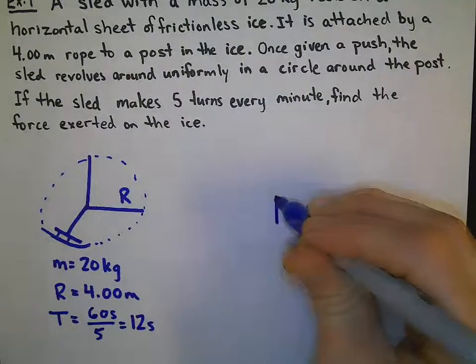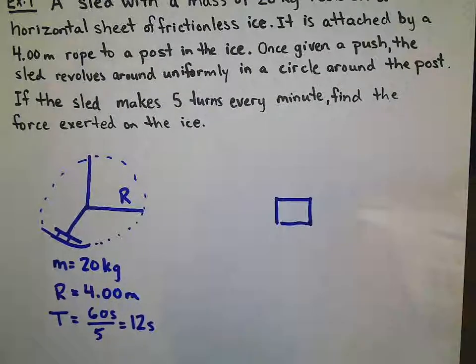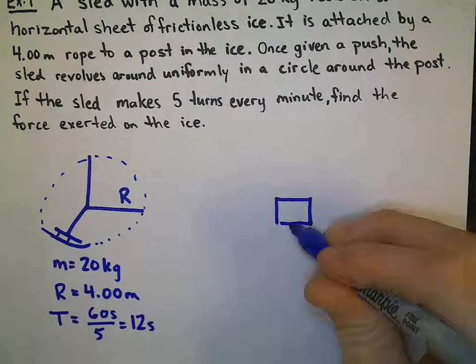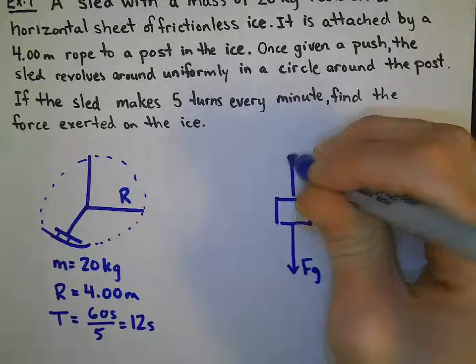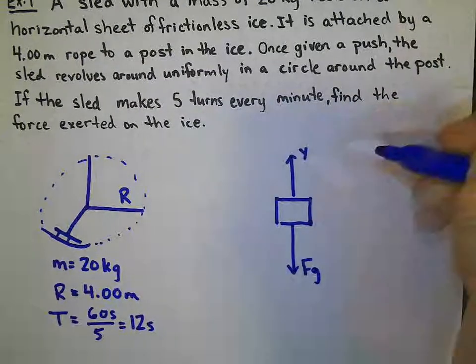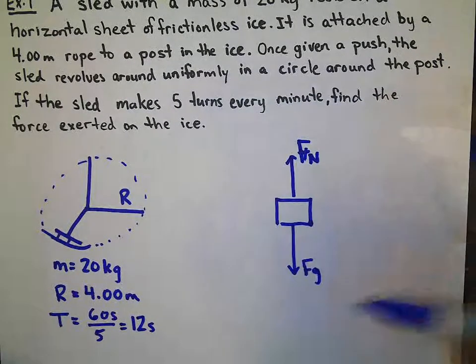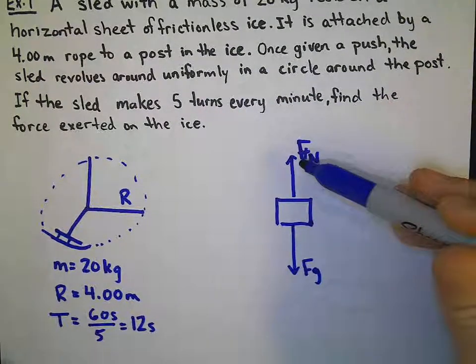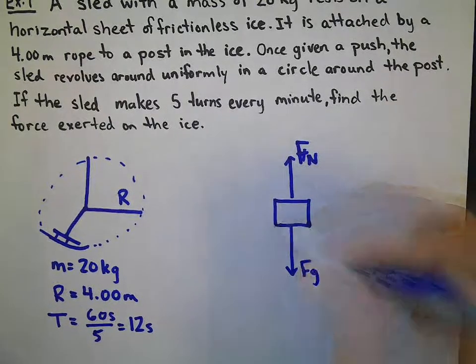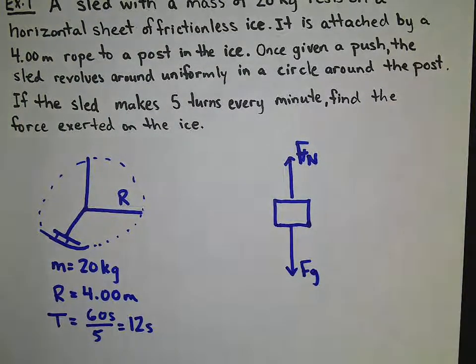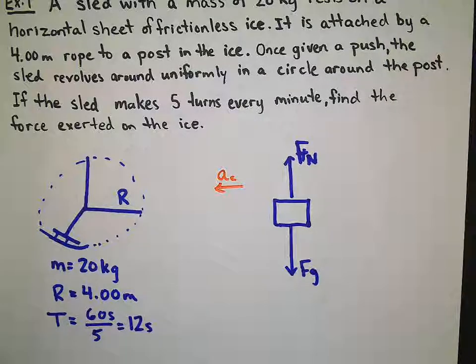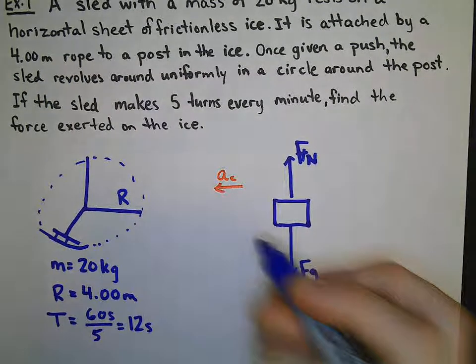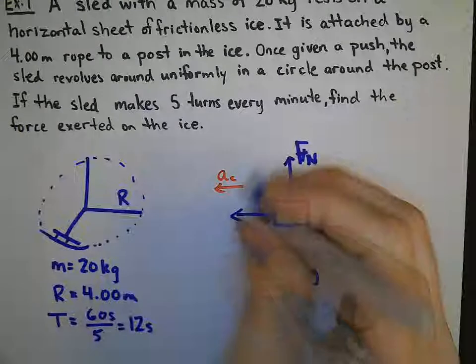If I have my sled as a free body diagram, picture this on the ground. The force of gravity is going to be acting down, and I will have that normal force acting in the opposite direction. These two are equal values because our sled stays in contact with the ground. We know, in this case, that my sled is accelerating towards the center. Therefore, my centripetal force will be acting towards the center as well.